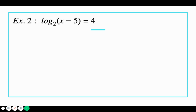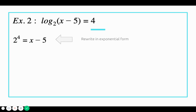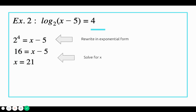This one only has one log on one side, and there are no logs on the other side. In this case, we're going to rewrite our work in exponential form. We take the base 2, put it to the power of the number on the other side — so 2 to the 4 — equals the thing being logged, x minus 5. We know 2 to the 4th equals 16, so 16 equals x minus 5. We add 5 to both sides and get x equals 21.